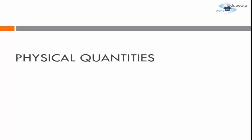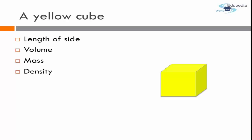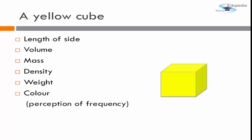What do we mean by physical quantity? Consider a yellow cube. Several people might take different approaches to describing it — some might state the length of its side, others might describe its volume, mass, density, or weight. Someone might even describe it by its color yellow, which is a human perception of the frequency of light reflected by the cube. All of these — length, volume, mass, density, weight, and color — are nothing but physical quantities.